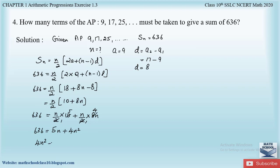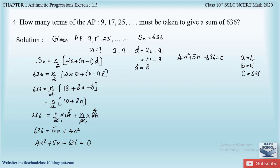Rearranging gives 4n² + 5n − 636 = 0. We solve this by splitting the middle term. For the quadratic 4n² + 5n − 636 = 0, we identify a = 4 (coefficient of n²), b = 5 (coefficient of n), and c = 636.